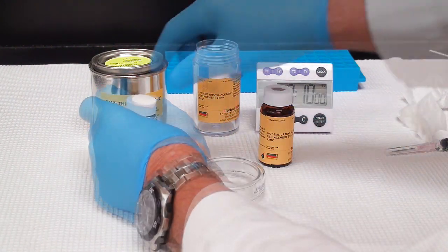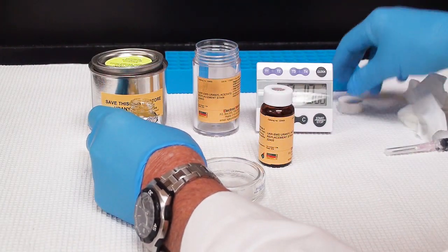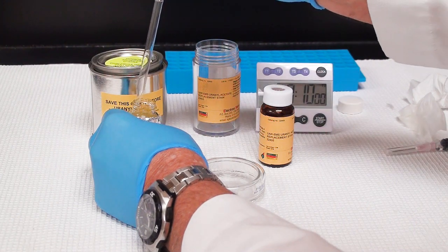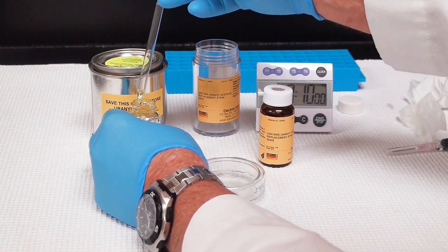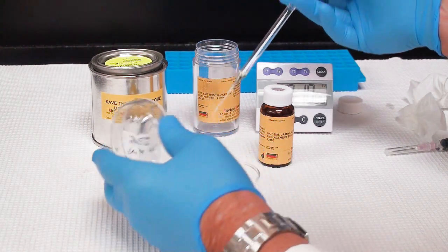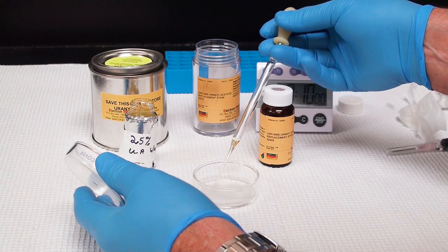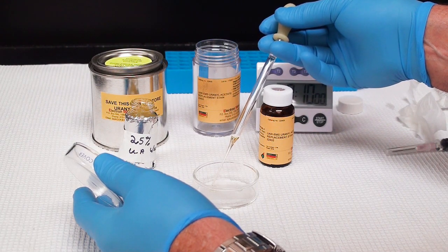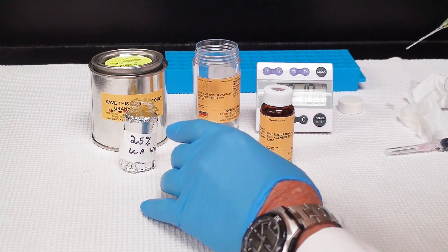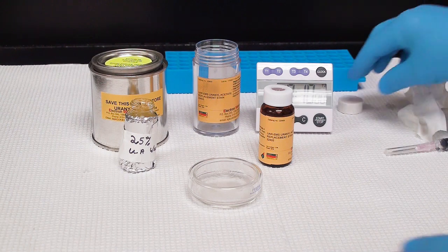I'm going to save that because I'll be doing the microwave. When I do my uranyl acetate, I like to use a glass pipette versus the plastic transfer pipette. So I'm using a pasteur pipette. I'm just going to draw some up in there, and then I'm just going to place a drop of the UA on the parafilm.